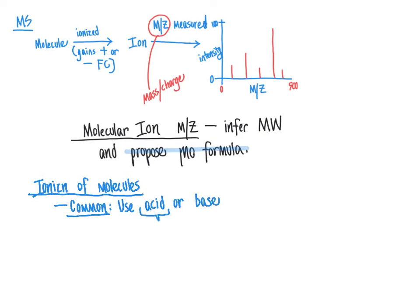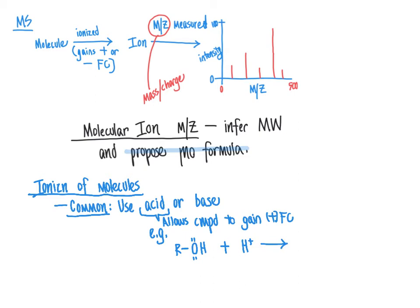An acid, being a proton donor, allows the organic molecule to pick up an extra proton and gain a positive formal charge. For example, with an alcohol molecule and its hydroxy group placed in an environment with excess protons, the oxygen uses its lone pair of electrons to pick up a proton from the acid. The resulting organic product has this extra proton bonded to the alcohol, giving it a positive formal charge, which allows the compound to be detectable by the mass spectrometer.